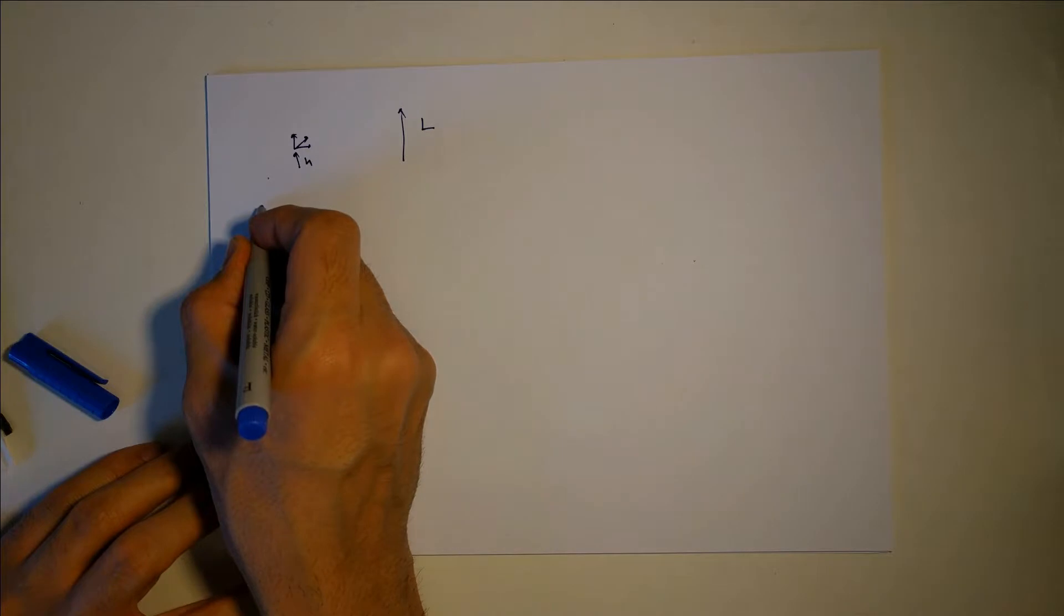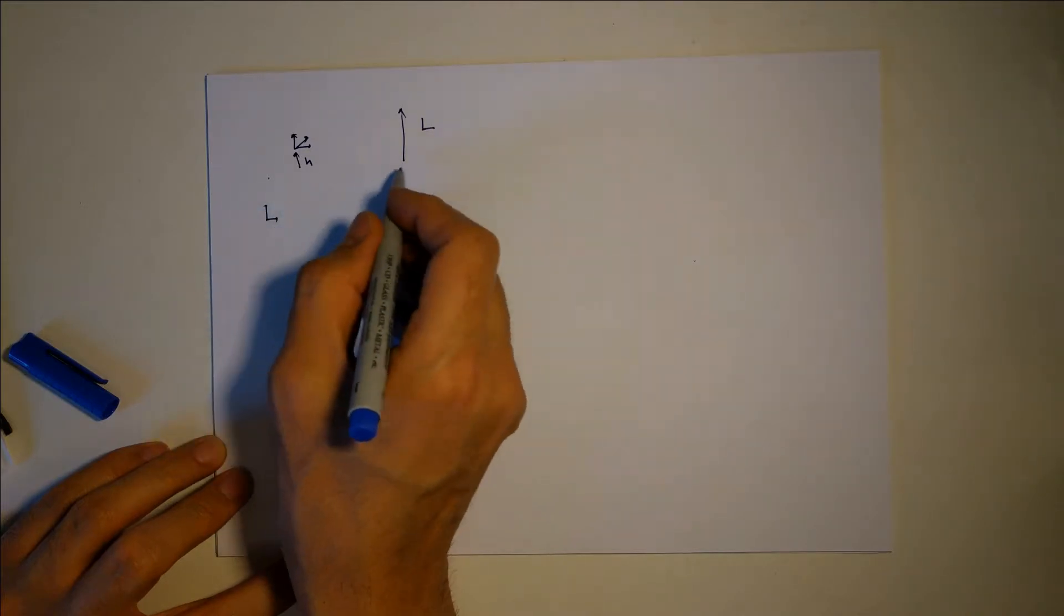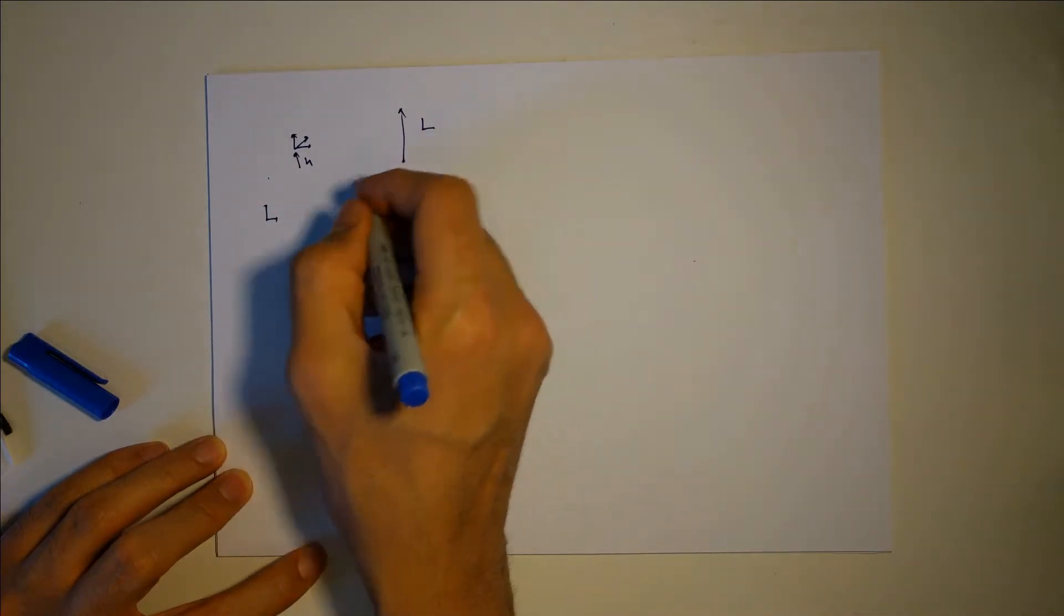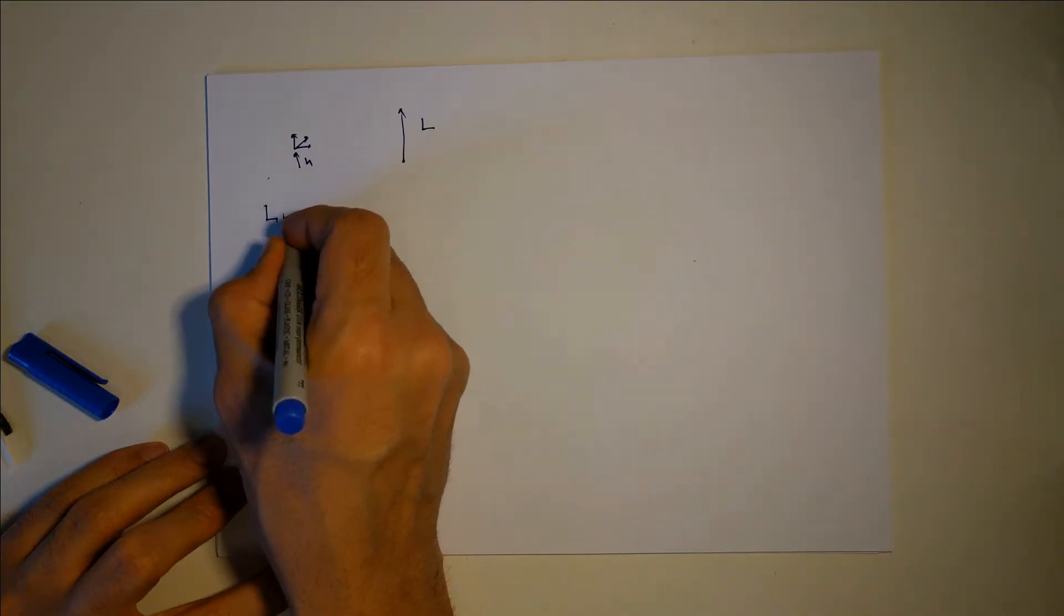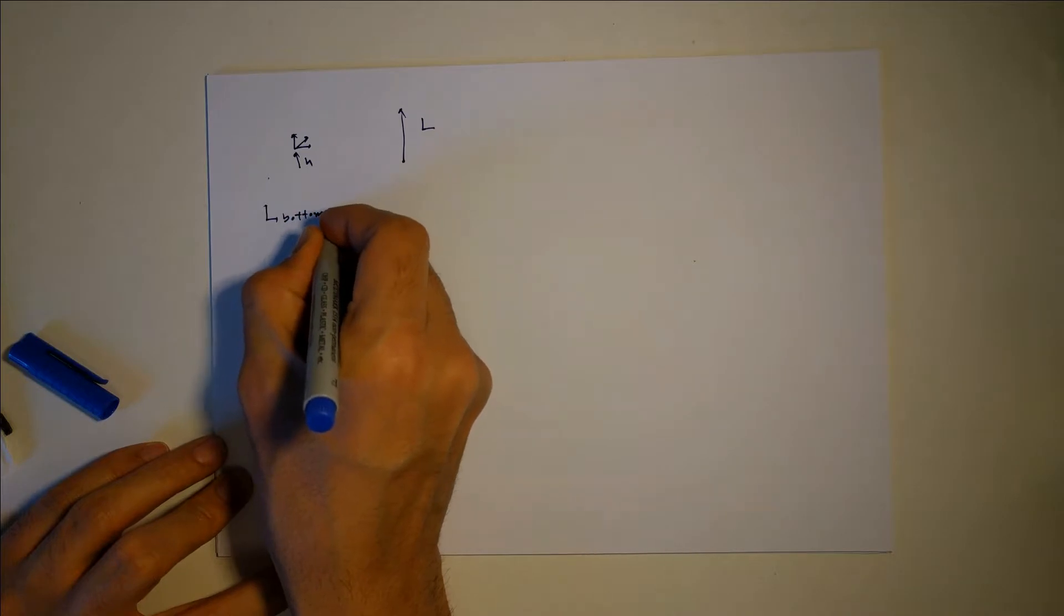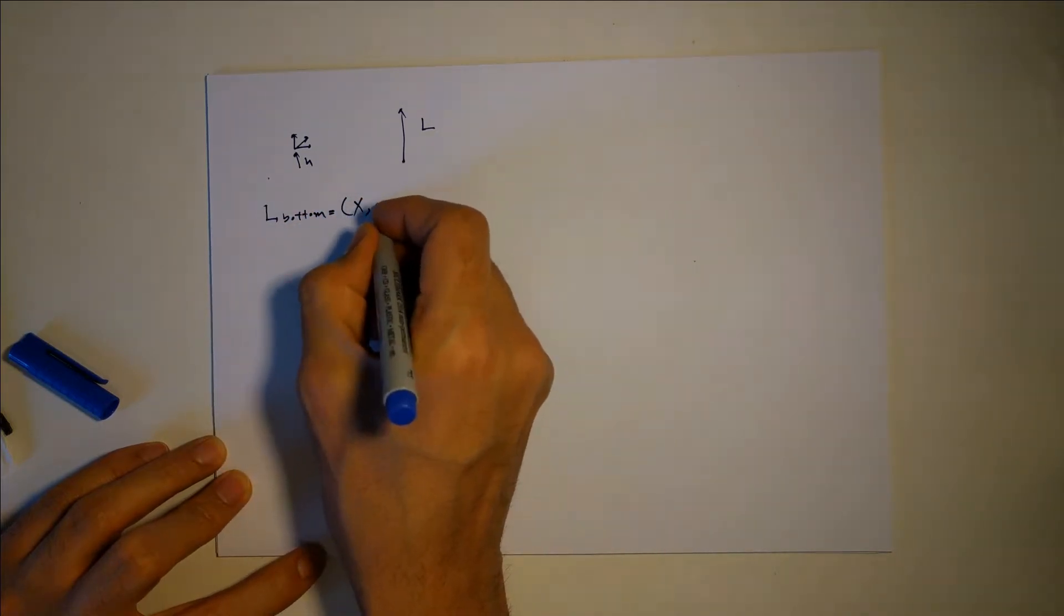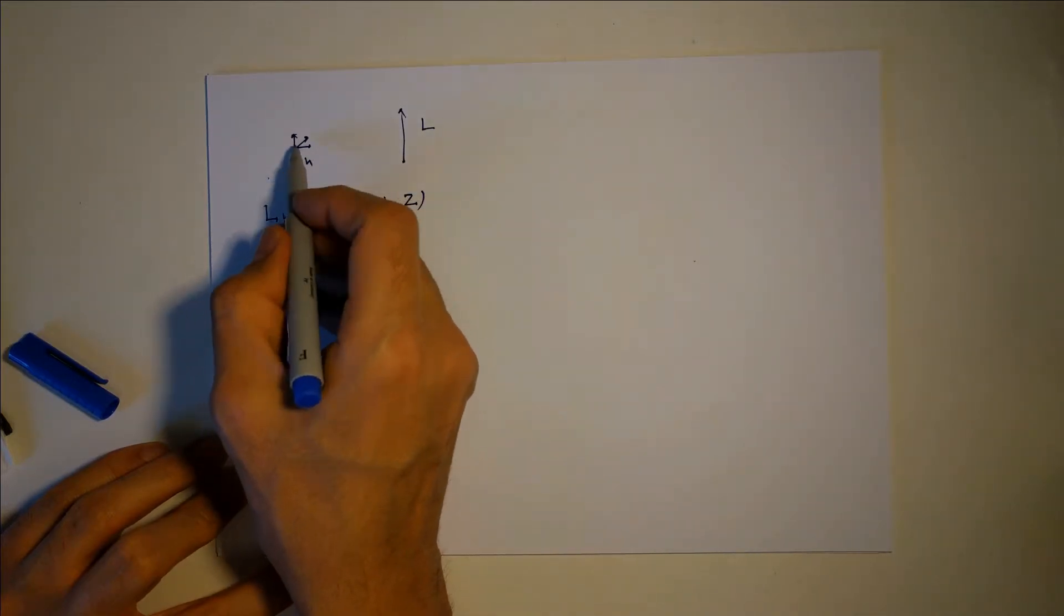I will write down the bottom point of this L. L for bottom is equal to x minus h and z, relative to this frame.